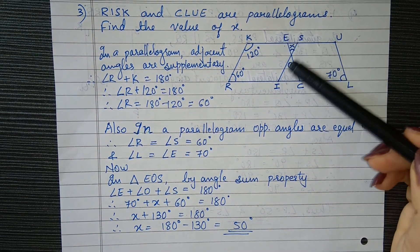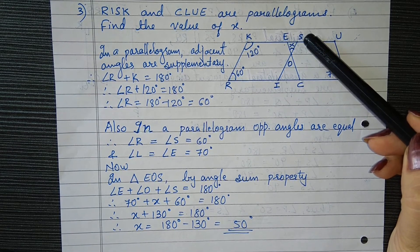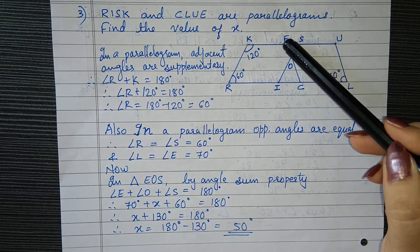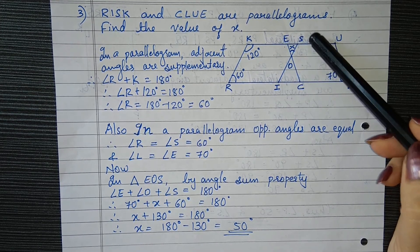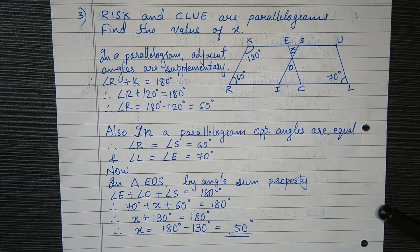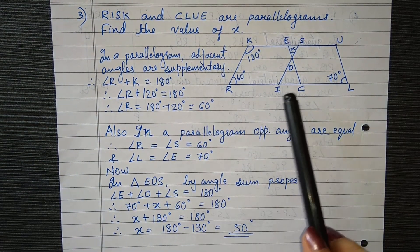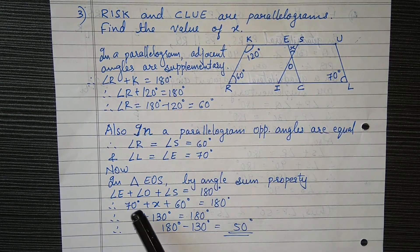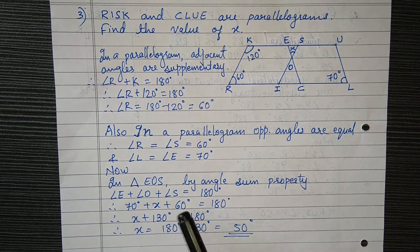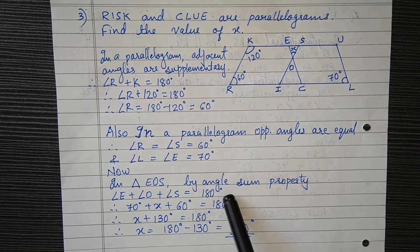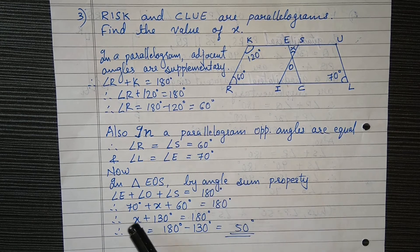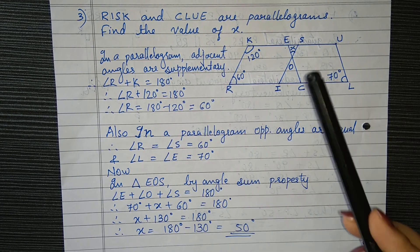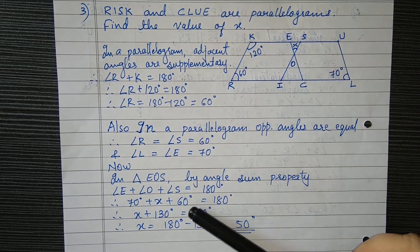Now if we consider only this triangle EOS, if we take the three interior angles of this triangle EOS, then we will get the value of angle X. Angle E plus angle O plus angle S equals 180 degrees. E is 70 degrees, O is X which we need to find, and S is 60 degrees.